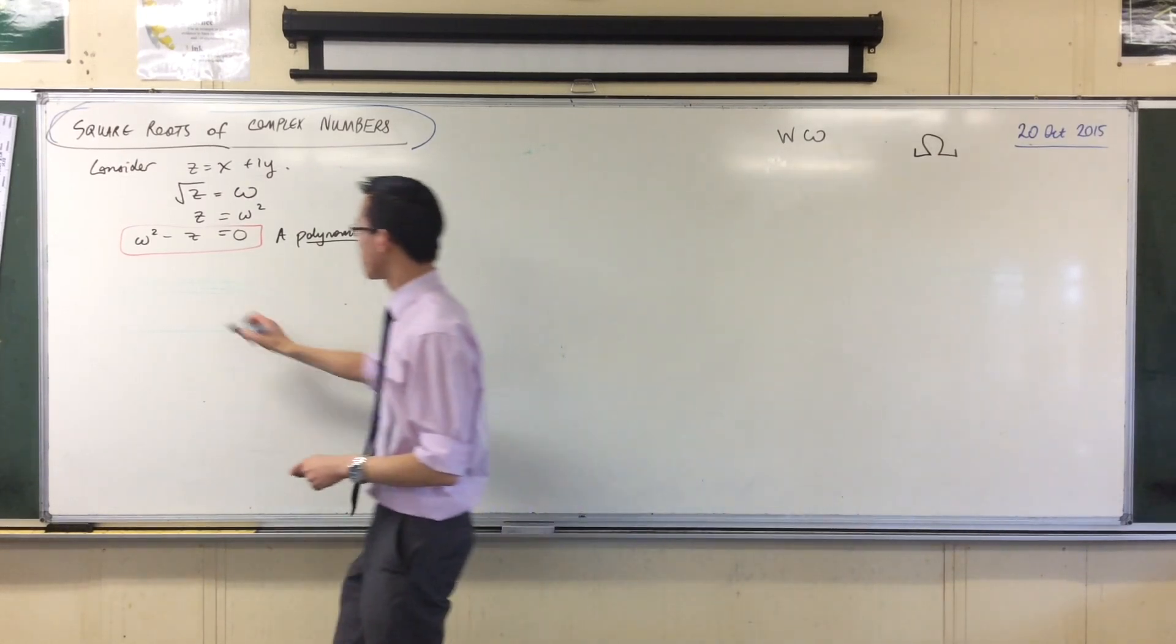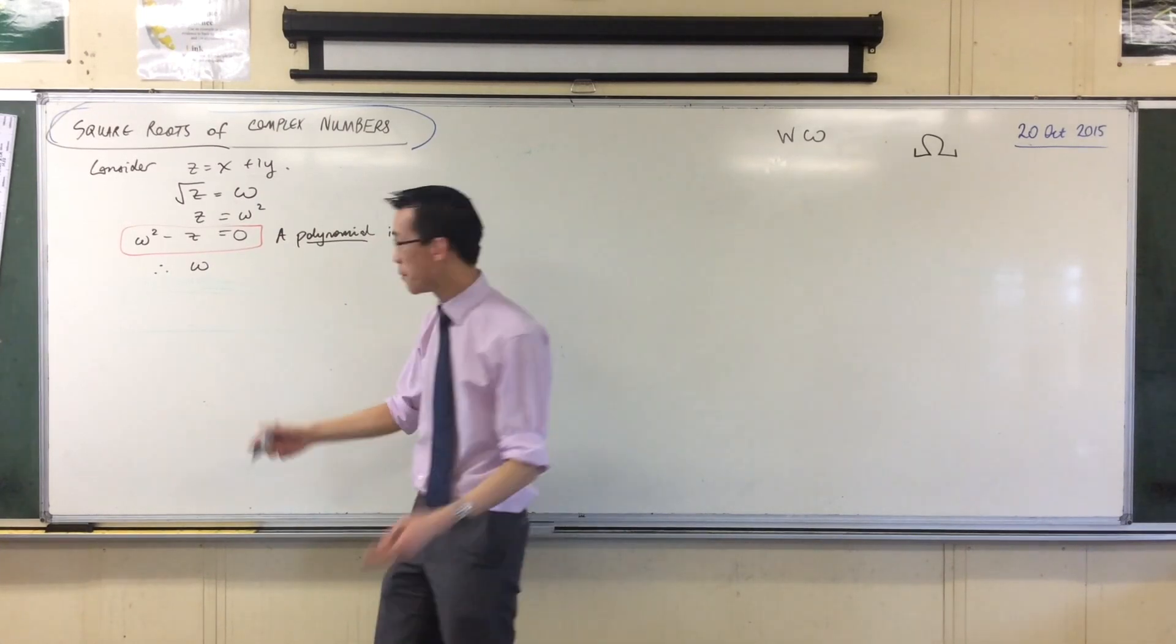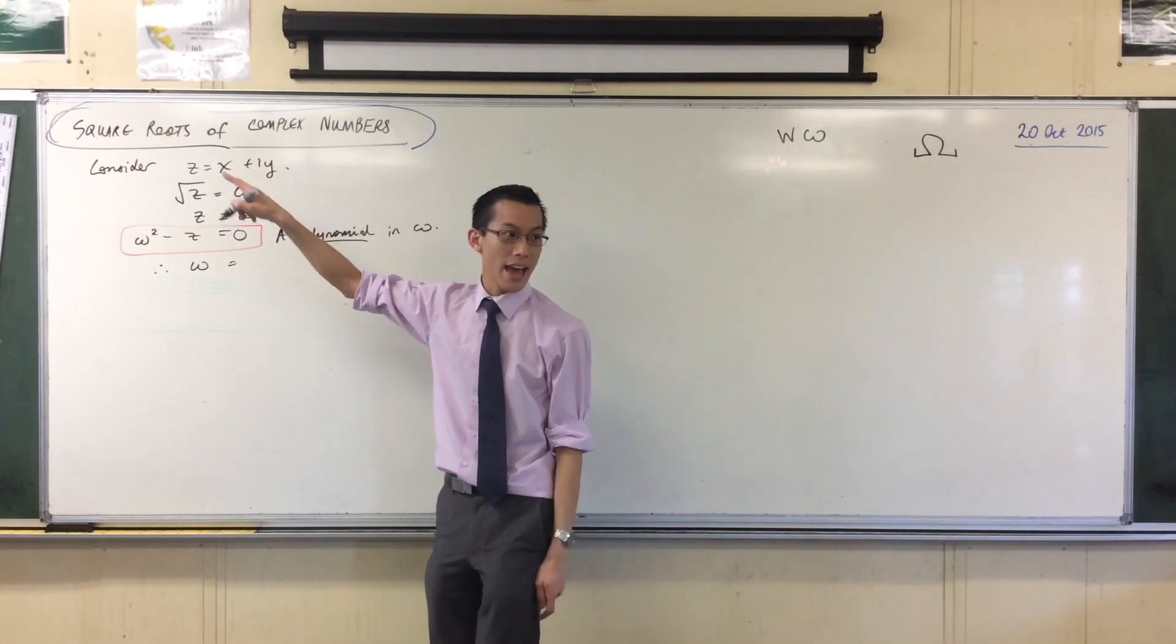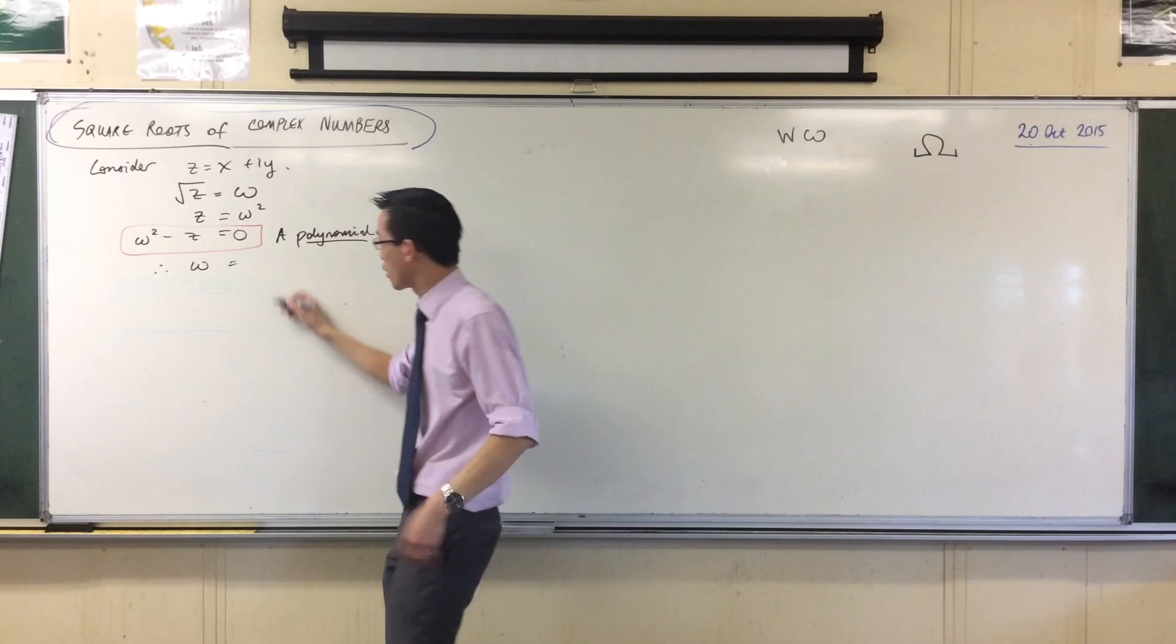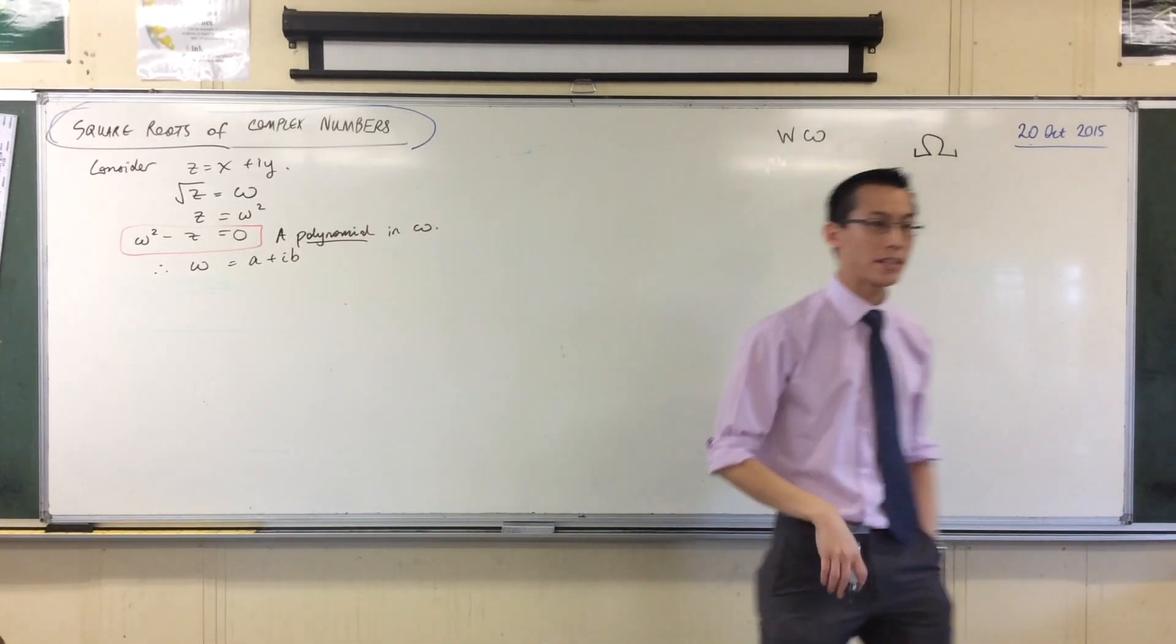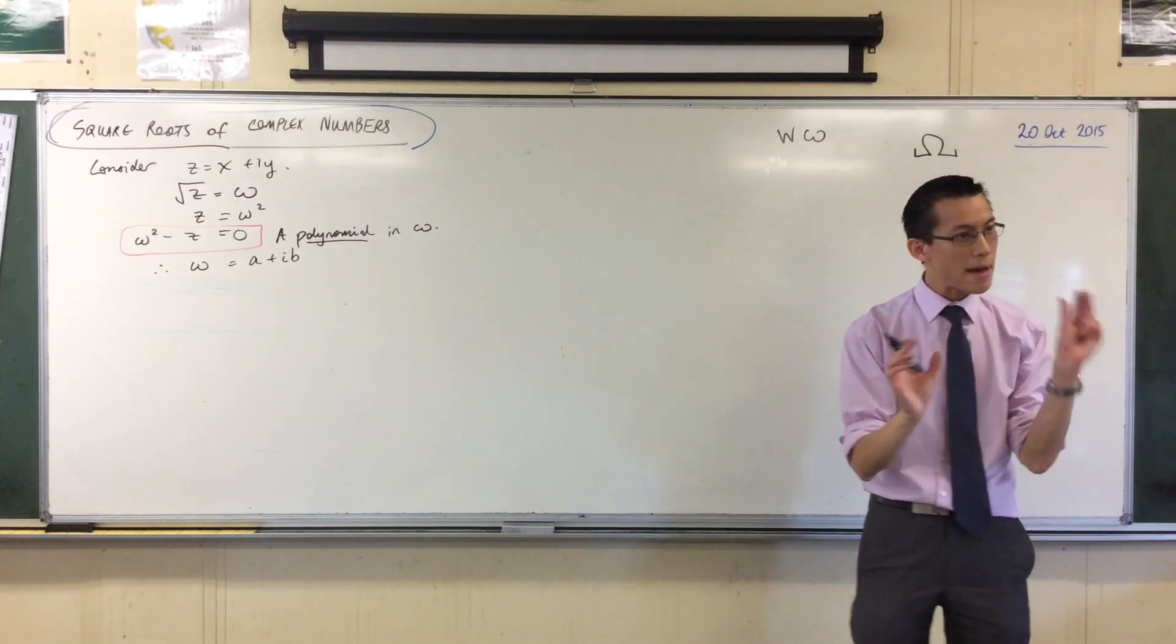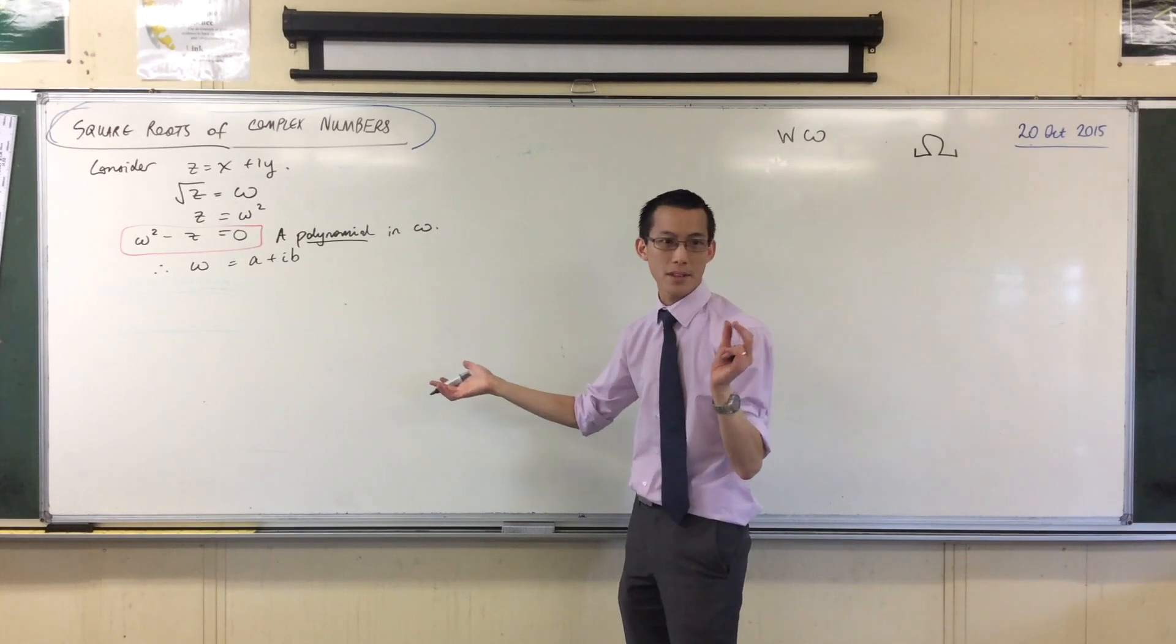Therefore, I know I can write omega as a complex number. Now, I've already used x and iy, so for instance, I could say a plus ib. That's another common designation for a complex number. Again, there's a real part, a, and there's an imaginary part, b.